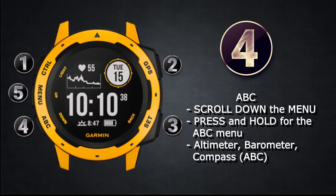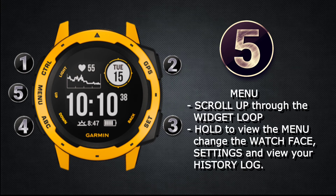Button number four is labeled ABC. It also functions as the down button when scrolling through the widget loop and other menus. ABC stands for altimeter, barometer, and compass. Press and hold to view the information on these sensors.